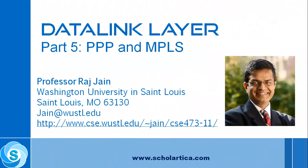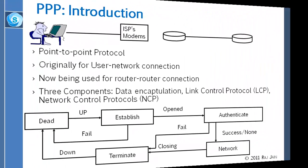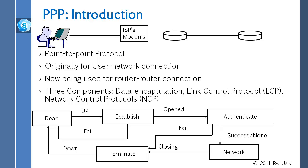PPP is point-to-point protocol. It is actually one of the first access protocols, much before Ethernet. Before Ethernet, all we had was point-to-point links, and the protocol run on top of that was called PPP. Even though Ethernet is here, we still use PPP because there are lots of point-to-point links. It was used for user-to-network connection — mostly designed so that you could dial in to an ISP and get onto the network.